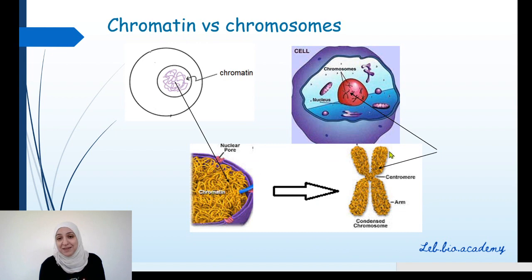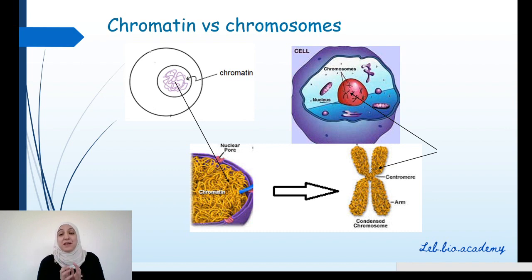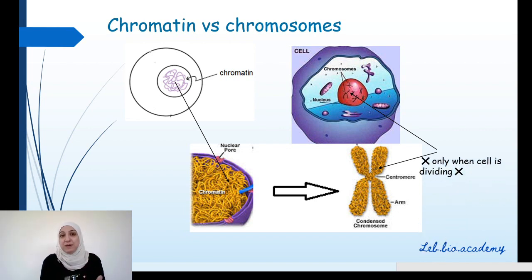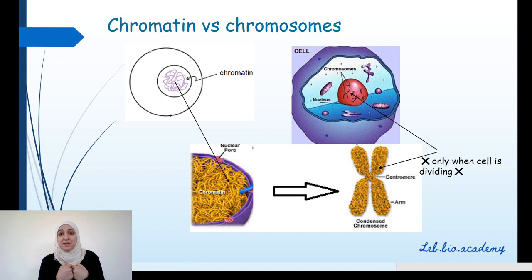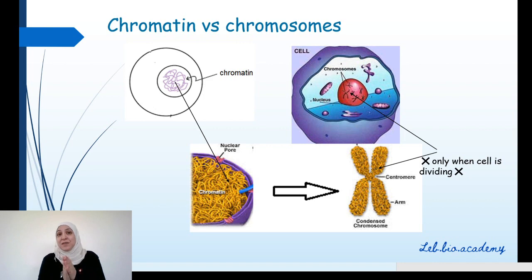What is the difference between chromatin and chromosomes? Chromatin and chromosomes actually have the same structure and the same genetic information, but they look different — they have different shapes. You find chromosomes inside the nucleus only when cells are dividing. If cells are not dividing and you observe them under the microscope, you will find chromatin inside the nucleus.